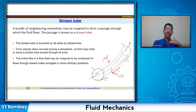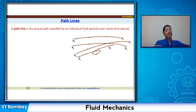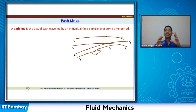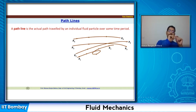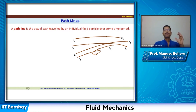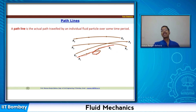Now let us look at path lines. A path line is the actual path traveled by a fluid particle over a period of time. This reminds us of the Lagrangian frame of reference — you track the fluid particle and follow how it moves in time. The path taken by a fluid element over a period of time, when drawn, is called the path line.